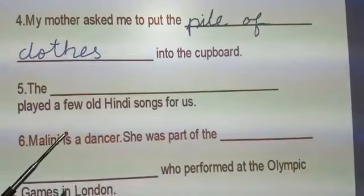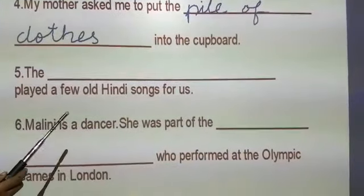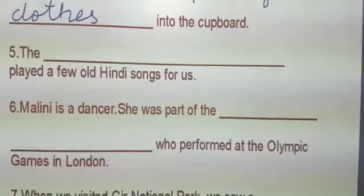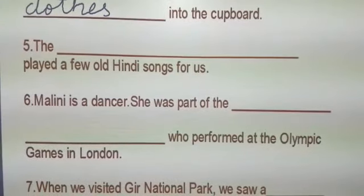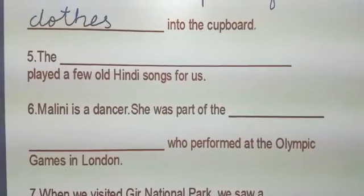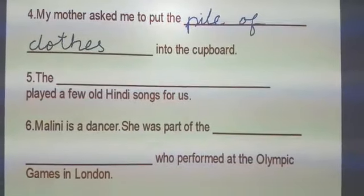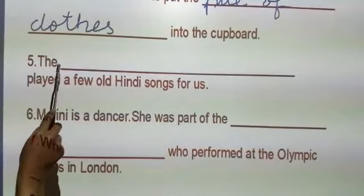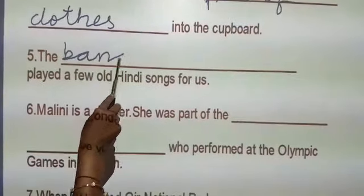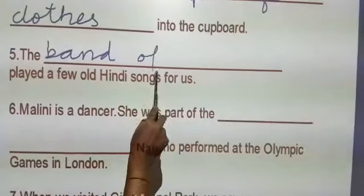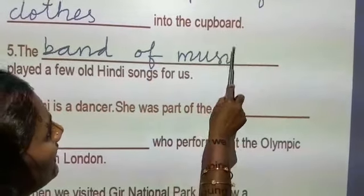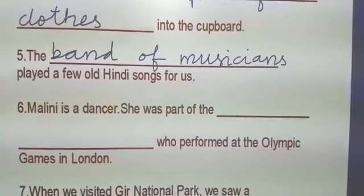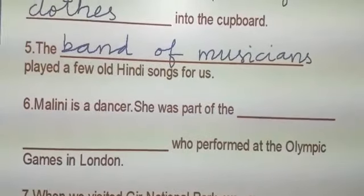Number five: The dash played a few good indie songs for us. Children, can you guess? The options are: band of musicians, flight of stairs, pile of clothes, bunch of bananas. What is the answer? Yes — very good. Band of musicians. B-A-N-D, band of musicians. M-U-S-I-C-I-A-N-S. All understood, children? You can copy this in the workbook.